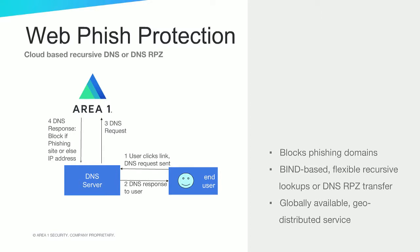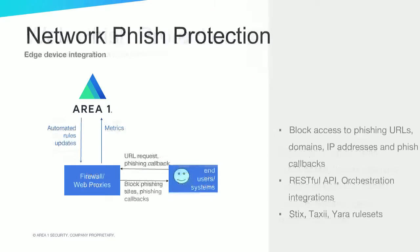To protect from malicious downloads from phishing sites, the service also includes a cloud-based DNS that integrates with your DNS server to block access to phishing URLs and domains. And to protect from phish callbacks and access to phishing sites, the service also easily integrates with edge security devices — automatically updating rule sets on firewalls and web proxies with early visibility to phishing sites so edge devices can detect and block phish that they would otherwise miss.